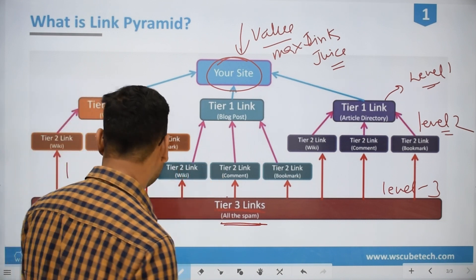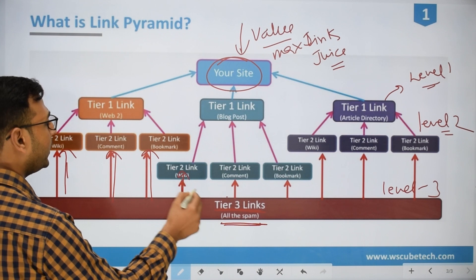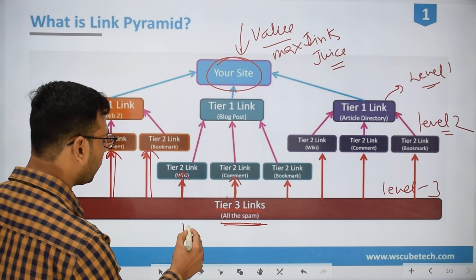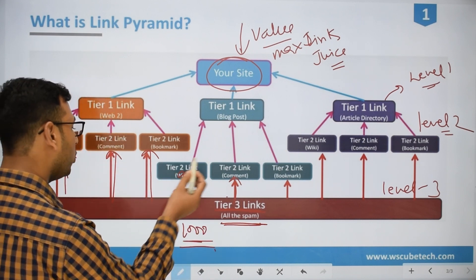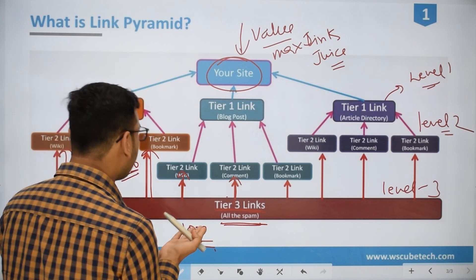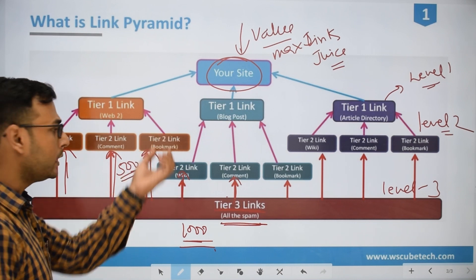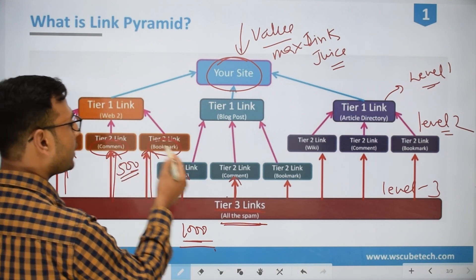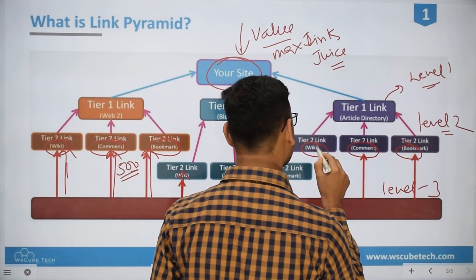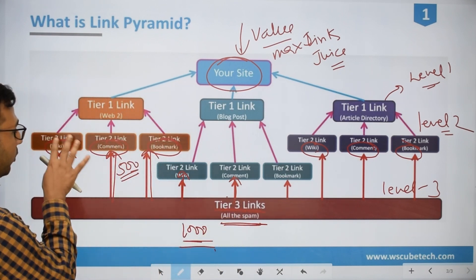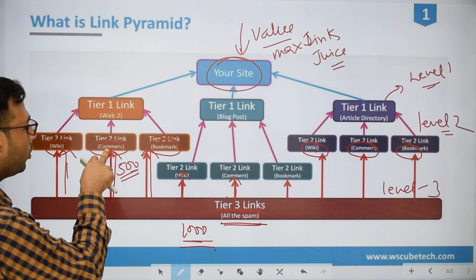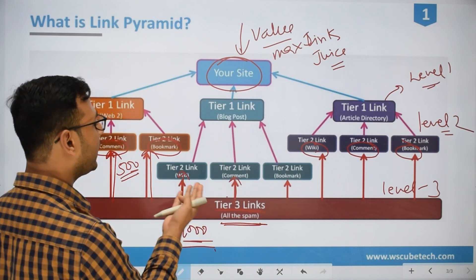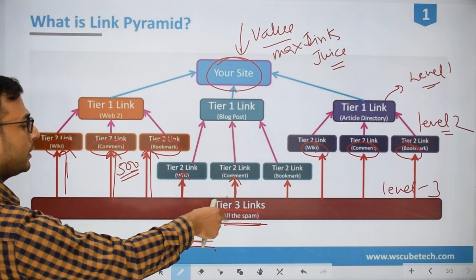These tier 3 links will now be pointing to tier 2 links. The tier 2 links are a bit better in quality when we compare them with the tier 3 links. If the number of links at tier 3 are 1000, then the number of links at tier 2 will be like 500 or 600. These tier 3 links will be pointing to tier 2 content — tier 2 content will be Wikipedia, comments, bookmarks. These are good links when we compare them with the tier 3 links.